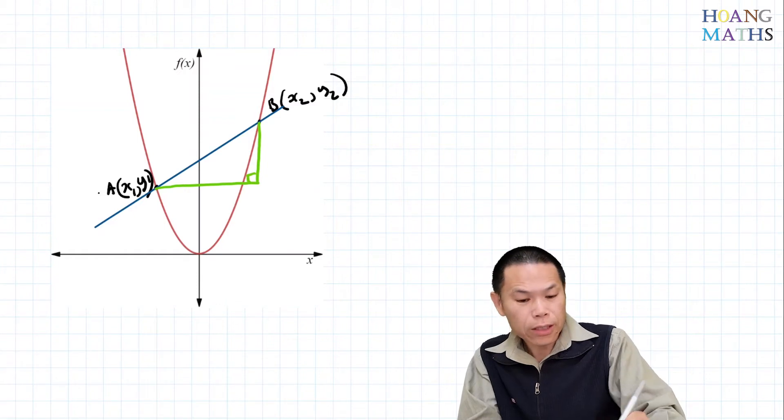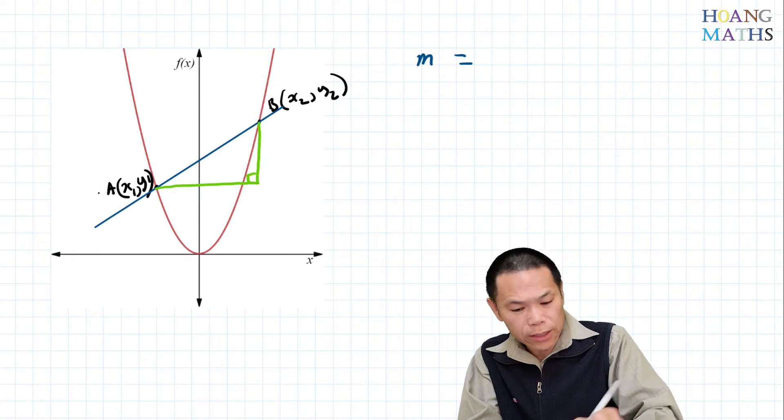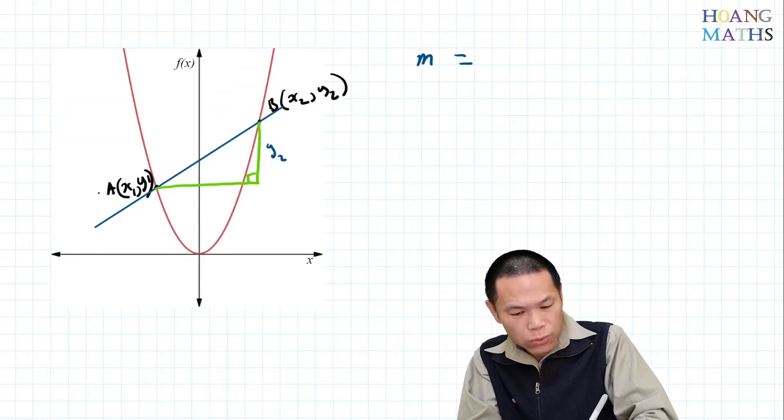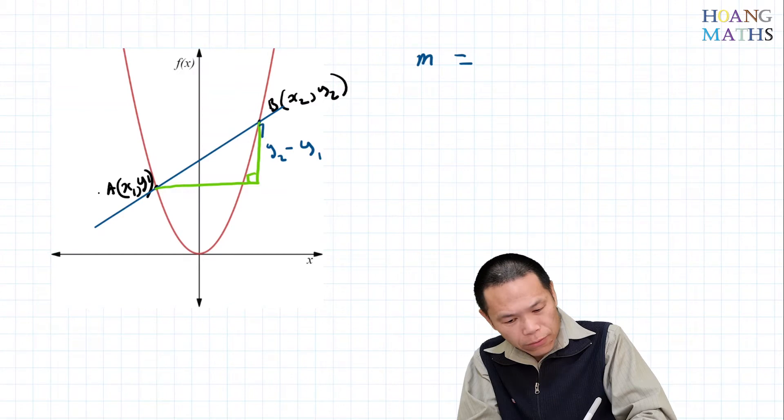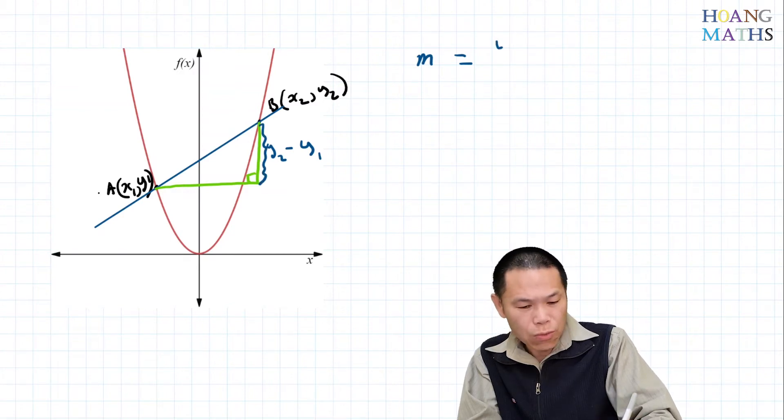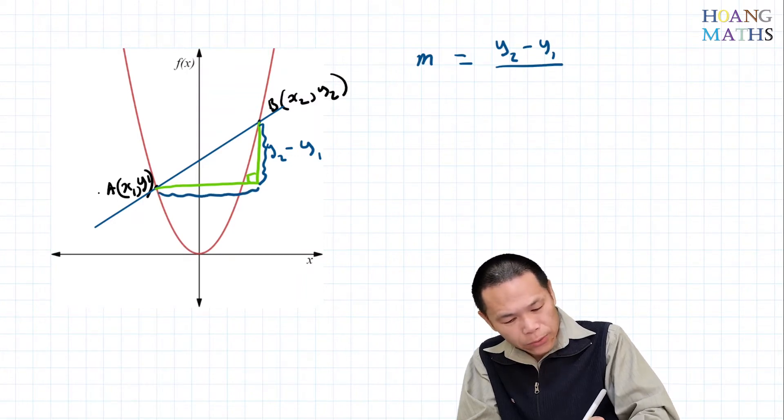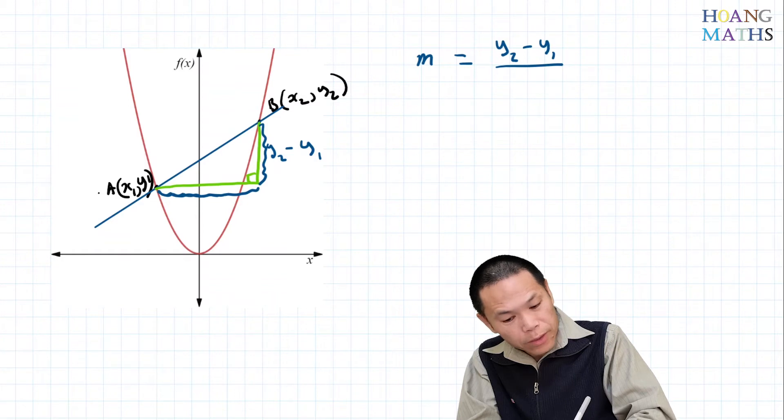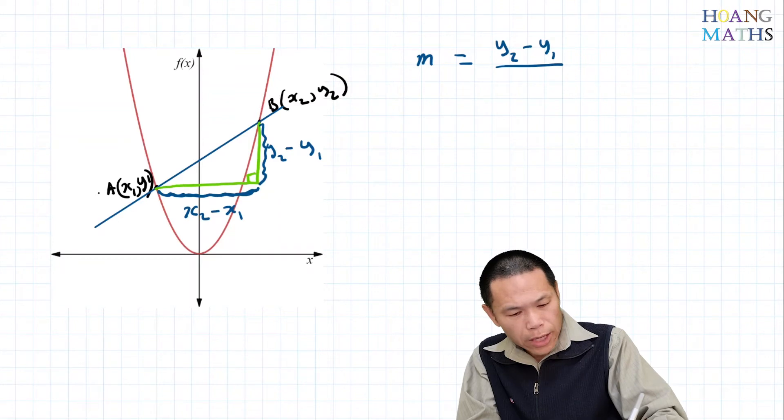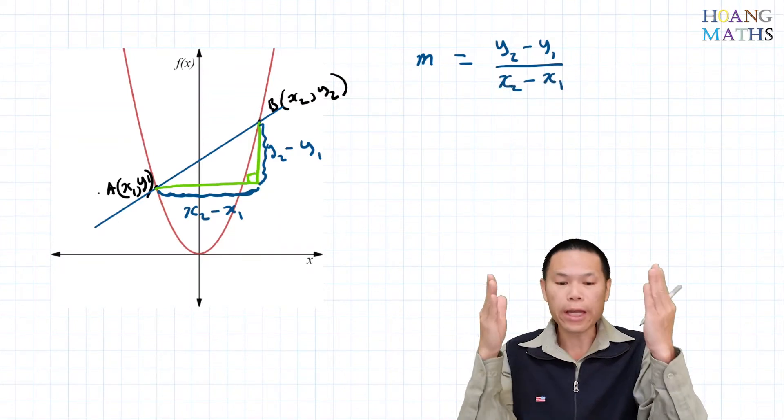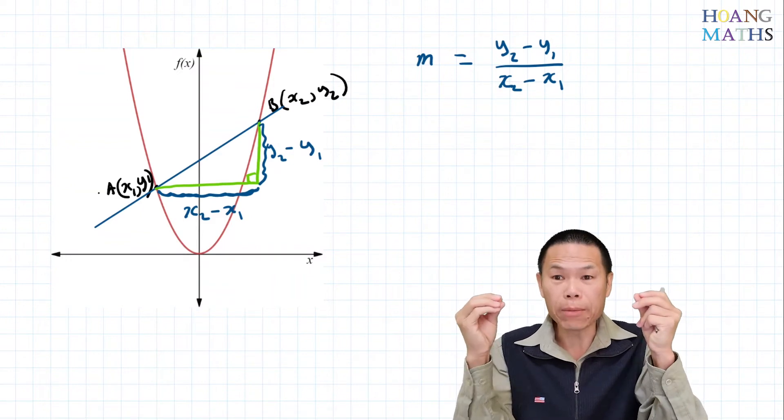The gradient m equals rise over run. The rise is y₂ minus y₁ - that's the vertical distance. Over the horizontal run, which is x₂ minus x₁. So m = (y₂ - y₁)/(x₂ - x₁). That's the gradient between A and B.